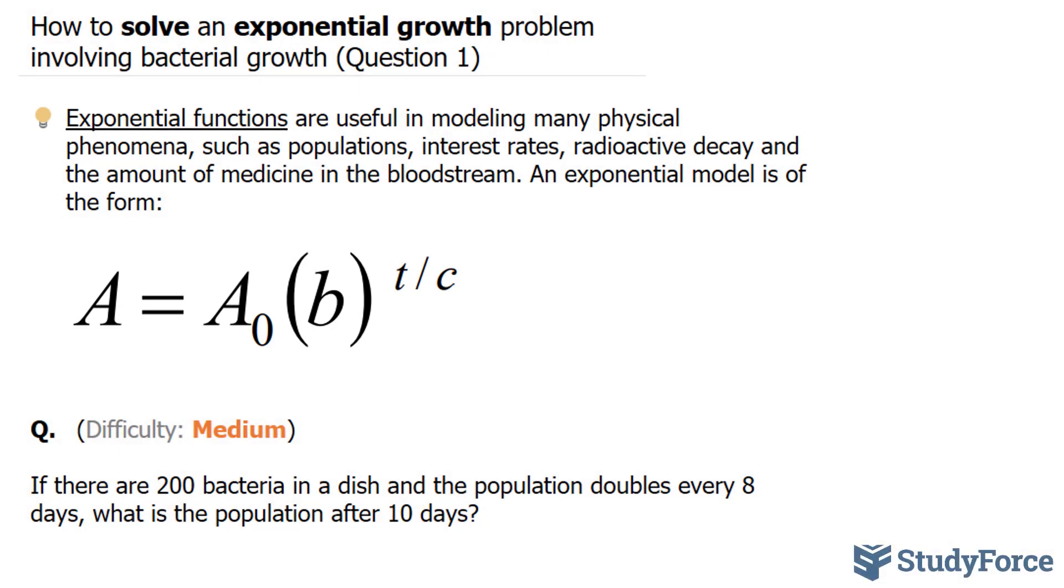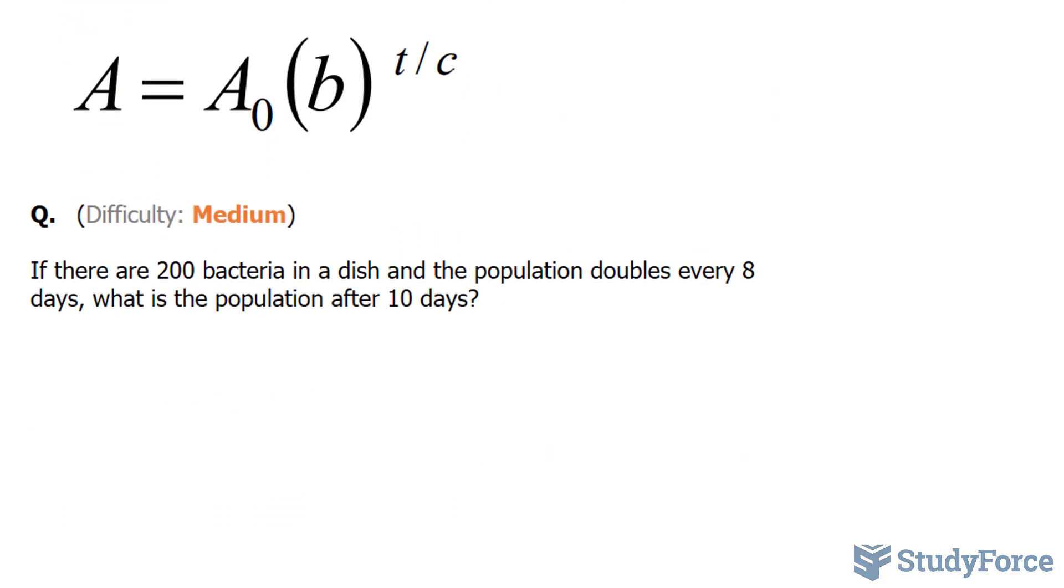Let's start with the question. The question reads, if there are 200 bacteria in a dish, and the population doubles every 8 days, what is the population after 10 days?